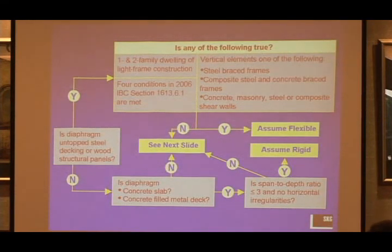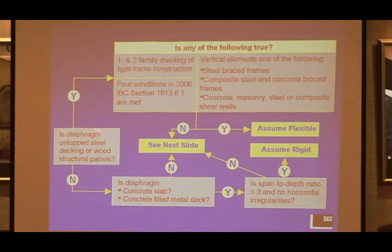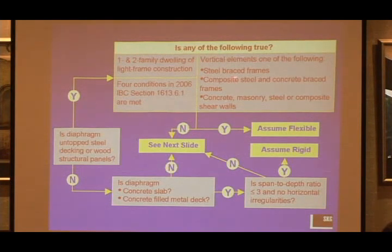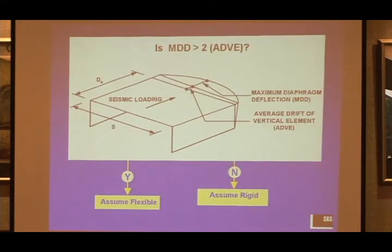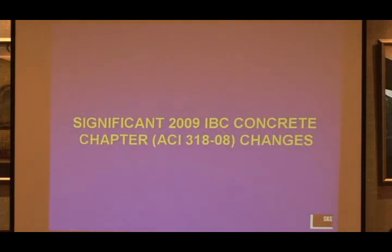What this flowchart does is take everything that I've said and put it all together in one place. You start here and ask yourself: is your diaphragm untopped steel decking or wood structural panels? If your answer is yes and one of the following boxes is true, then you can assume flexible. If one of these three boxes is not true, then you have to go to the calculation and compare your diaphragm deflection with your vertical resisting element drift. If you have what looks like it's going to be a rigid diaphragm, you follow this path and see if you can comply with the prescriptive approach for the rigid diaphragm. If yes, then you assume rigid. If no, then you do have to go to calculating the deflections.